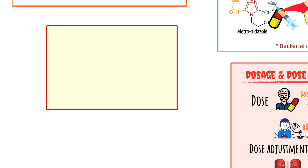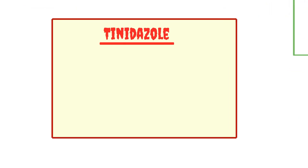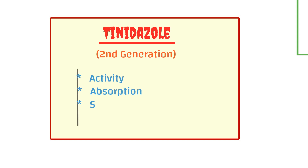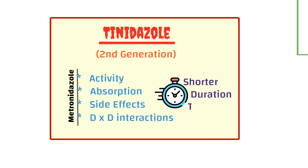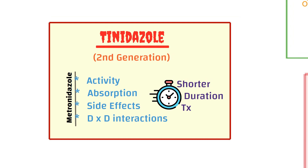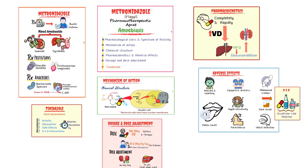Finally, tinidazole is a second-generation nitroimidazole with activity, absorption, side effects, and drug interactions similar to metronidazole. Tinidazole is equally effective but requires a shorter duration of treatment. Throughout therapy, alcohol use should be avoided.